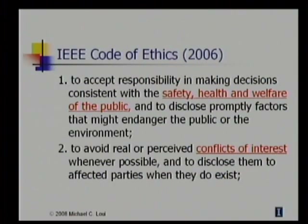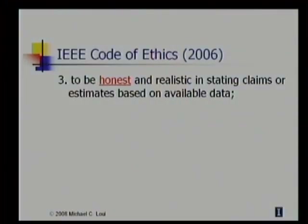Second, to avoid real or perceived conflicts of interest whenever possible and to disclose them to affected parties when they do exist. Another video in this collection talks about conflicts of interest, so I refer you to that. Third, to be honest and realistic in stating claims or estimates based on available data. This is a basic obligation of honesty with employers and clients. One might be tempted to report only favorable results from lab tests or to underbid to get a contract, but there could be serious consequences from even small matters of dishonesty. What about one's long-term reputation for personal integrity or the long-term impact from erroneous data or insufficient budgets?